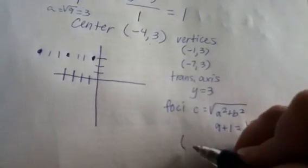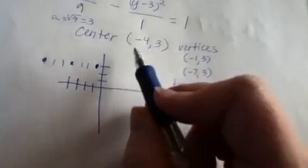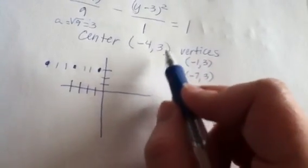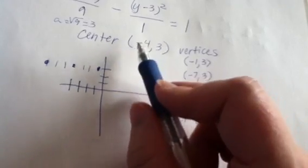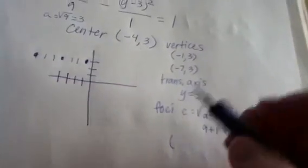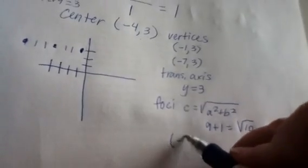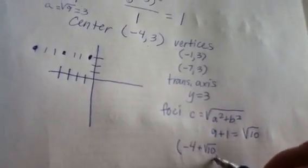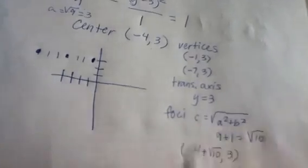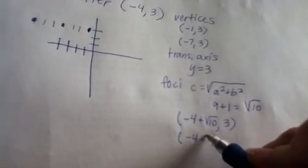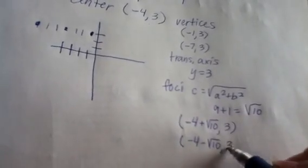So our foci then will be located... Now here's the tricky thing. You take the center point. The y value is going to stay the same. But the x value is going to be where the foci start at. So it's going to start at the point (-4) and then it will be either to the right √10 and then it's still at y equals 3...